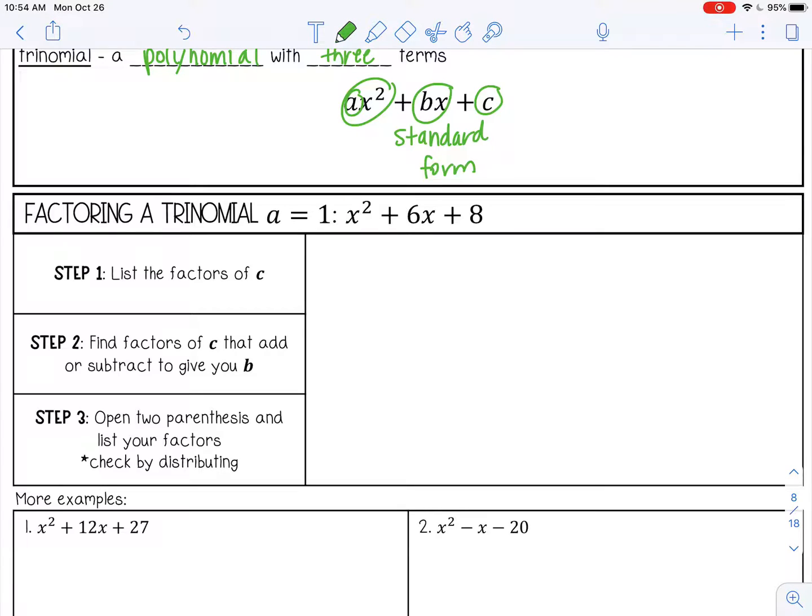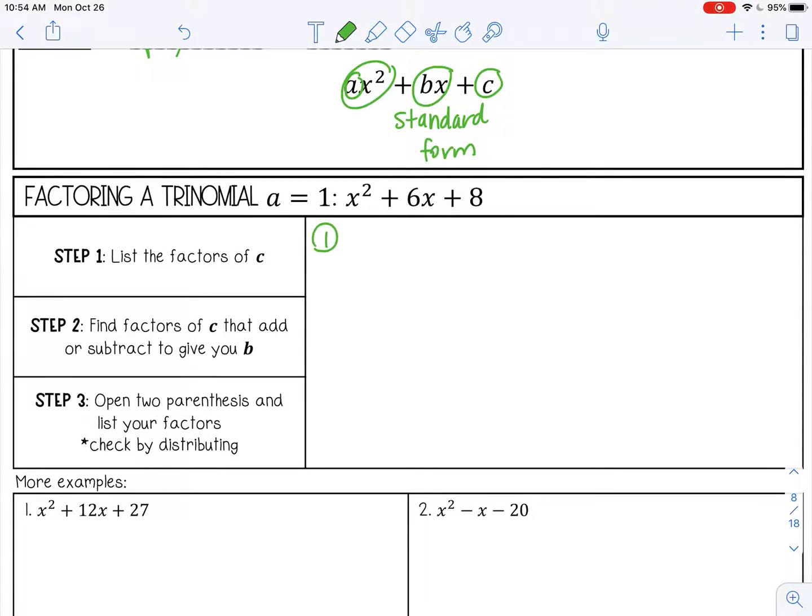So the first thing that you're going to do is list the factors of c. So this is a, b, and c. The coefficients, or c is a constant. So we're going to list the factors of c, that constant. So the factors of 8 would be 1 times 8, 2 times 4. And that is all. Those are all the numbers that will multiply together to give you 8.